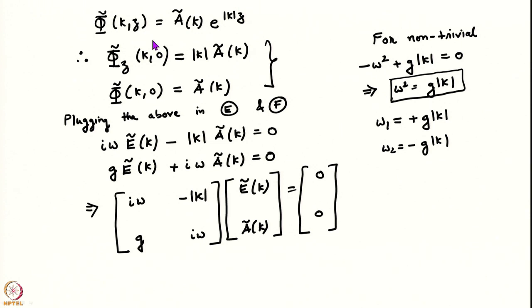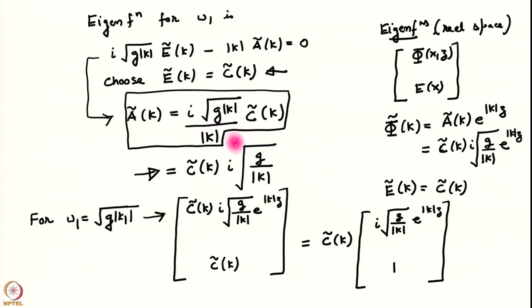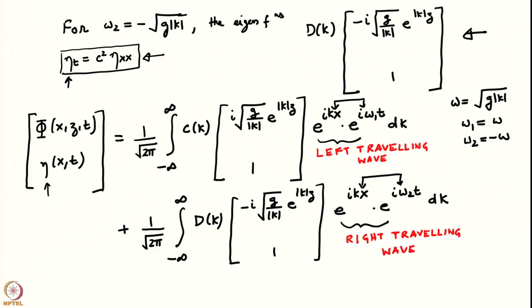There are two branches to the dispersion relation. We then found, for each of the frequencies, an eigenfunction written as a column vector, so there were two such eigenfunctions. The general solution is written as a linear combination of the eigenfunctions, where the pre-factors are themselves functions of the wave number k. The solution has the form of a left-travelling wave and a right-travelling wave: one is of the form e to the power i(kx + ωt) and the other e to the power i(kx − ωt), where ω = √(gk).